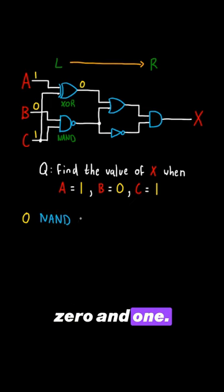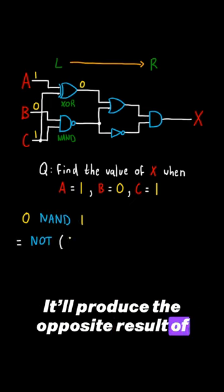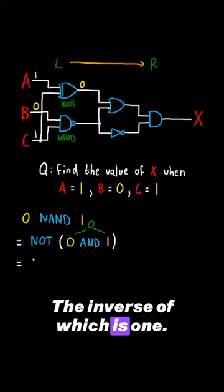The NAND gate has the inputs 0 and 1. It'll produce the opposite result of an AND gate, which would be 0, the inverse of which is 1.